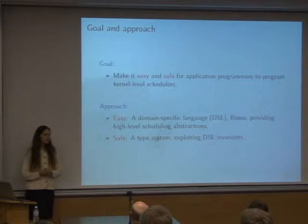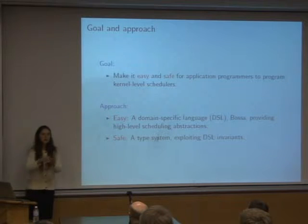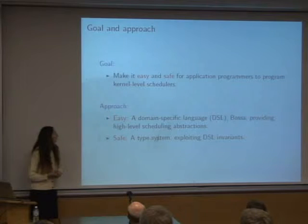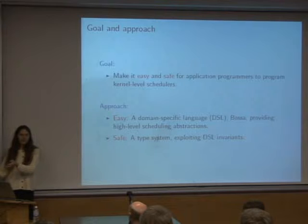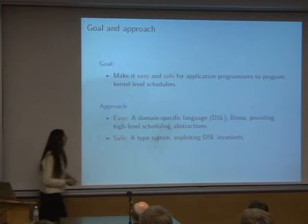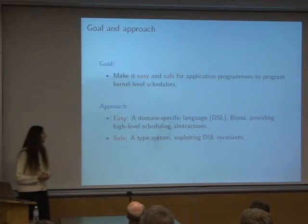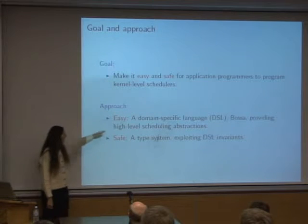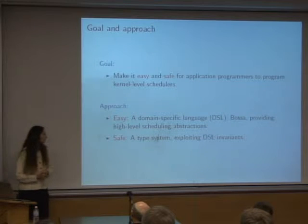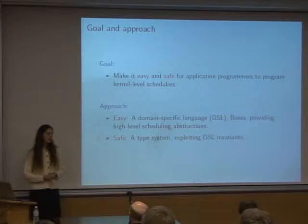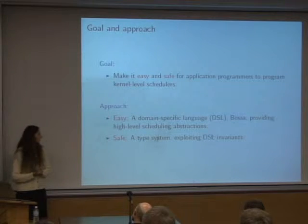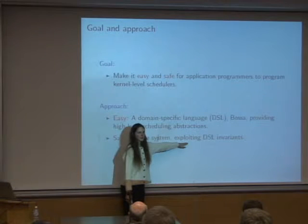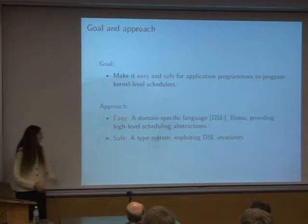There are many different kinds of scheduling algorithms targeting different kinds of applications with different properties. The problem, though, is that if you look at your operating system, it's only going to give you basically one algorithm. What we would like to do is make it both easy and safe for application programmers — the people who actually know what scheduling properties are needed — to write schedulers at the kernel level. The two key words are easy and safe. To make it easy, we introduce a domain-specific language called BOSA, which provides appropriate abstractions. For safety, we propose a type system — basically a system of pre- and post-conditions.